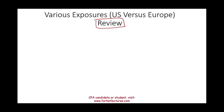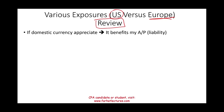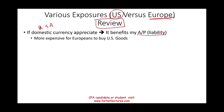We are going to be looking at the U.S. as the home currency, buying and selling from a European supplier. Starting with what happens if your domestic currency appreciates: if your domestic currency appreciates, it's going to benefit your liability. If you have a payment in a foreign currency and your currency went up in value, it benefits you. However, it becomes more expensive for Europeans to buy U.S. goods, so as an importer you like it, but as an exporter you don't.